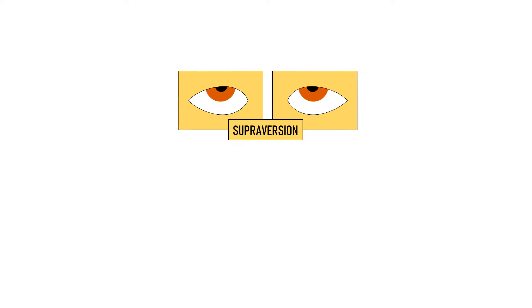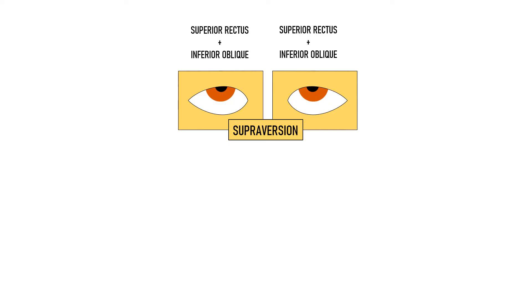When the eyes are in supraversion, the elevators of the eye are tested. The muscles responsible for elevation are superior rectus and inferior oblique — both the superior rectus and inferior oblique of the right eye, and the superior rectus and inferior oblique of the left eye. So in supraversion, we are not able to isolate a single muscle in each eye because two muscles of each eye are acting together.